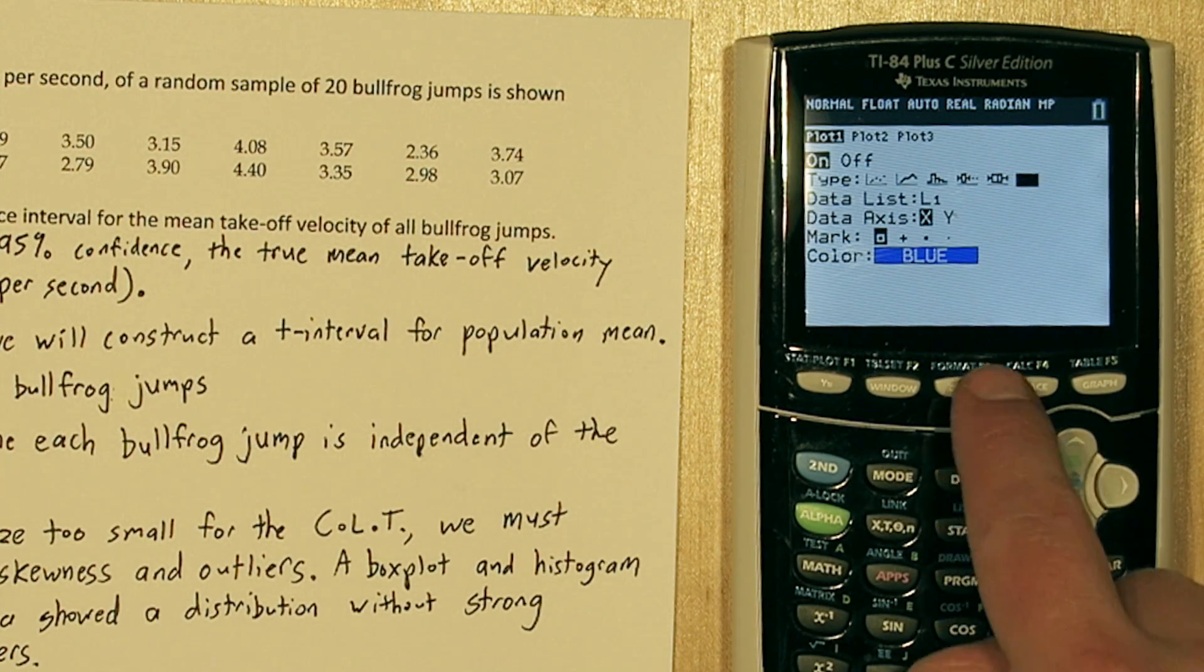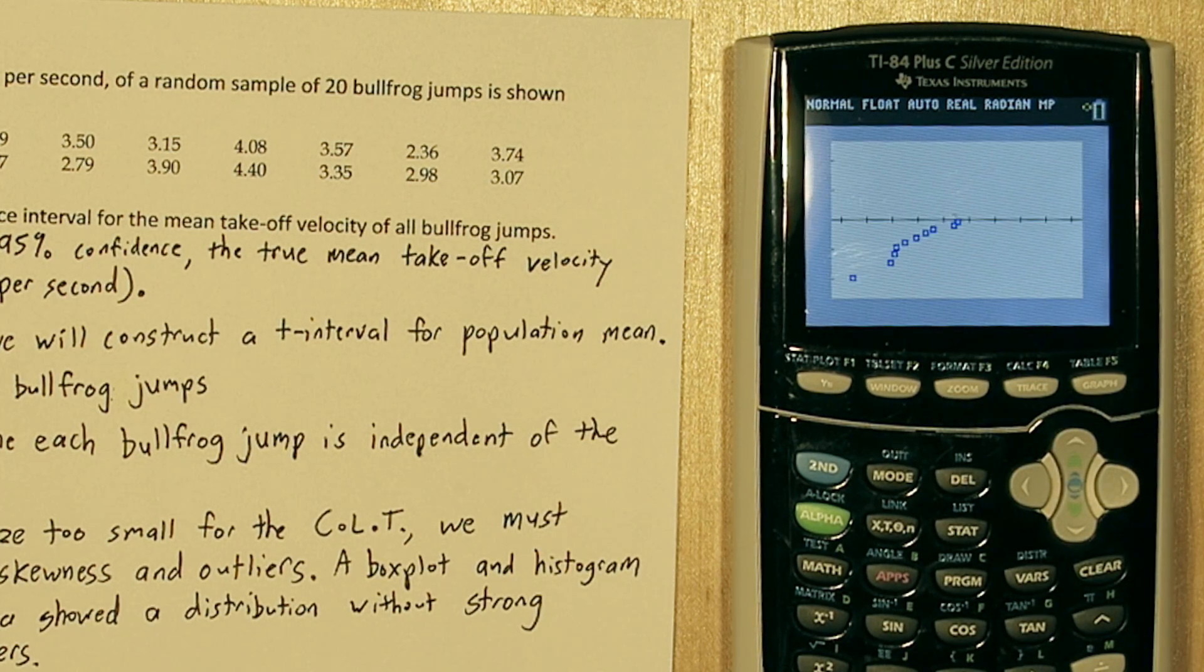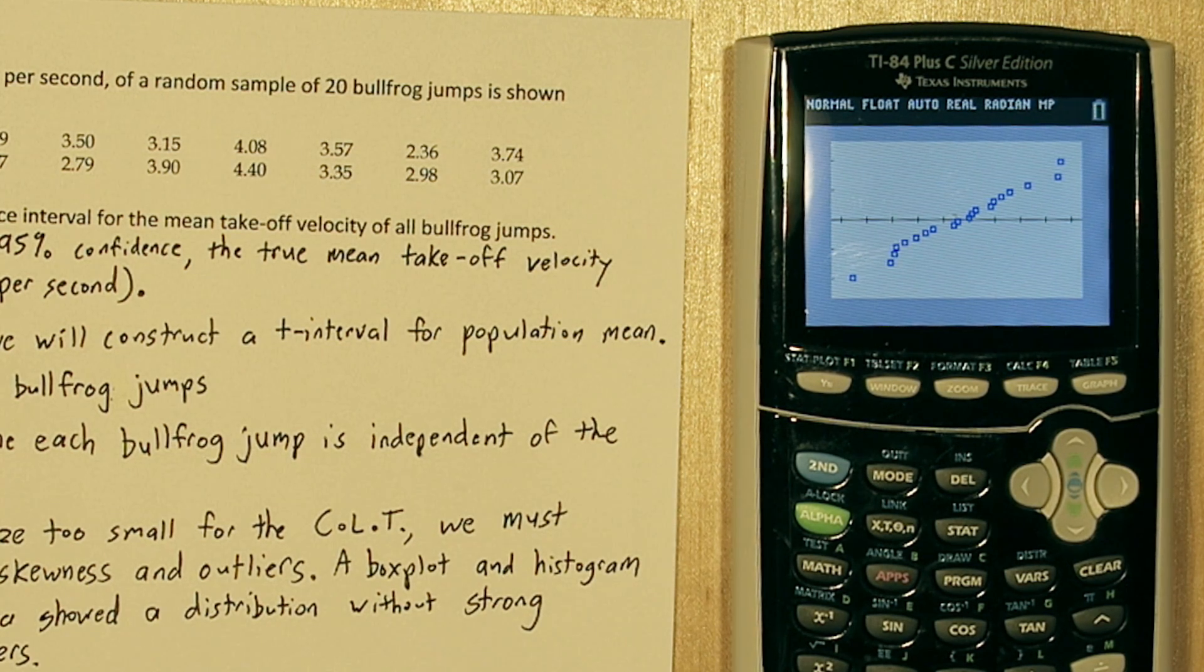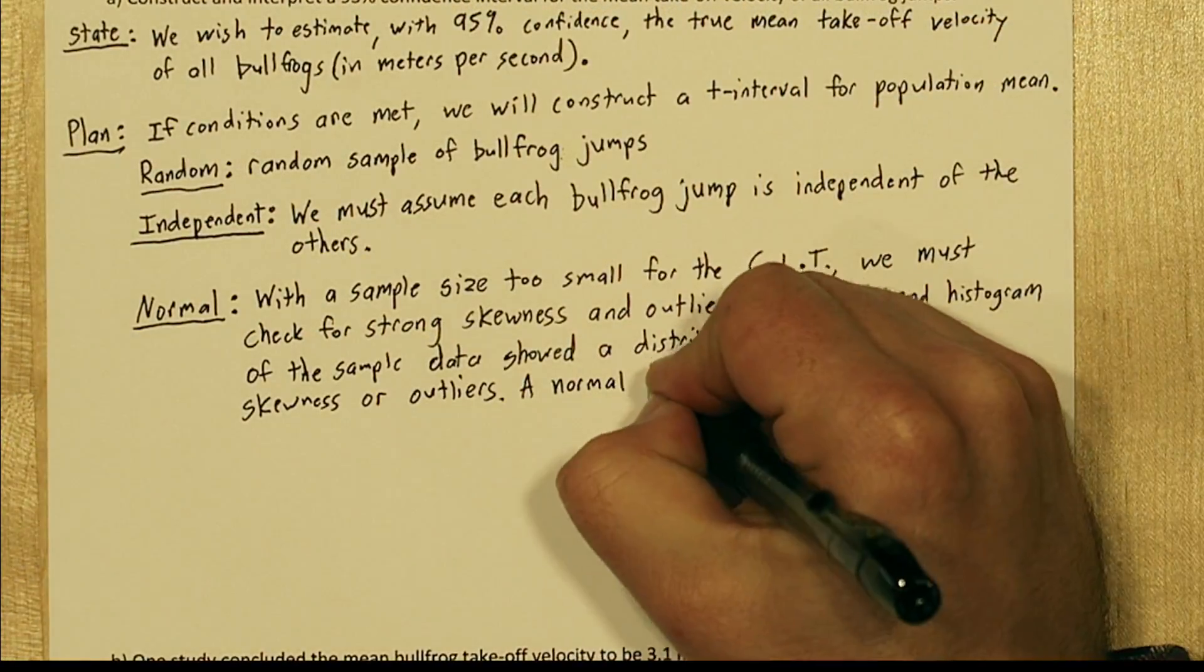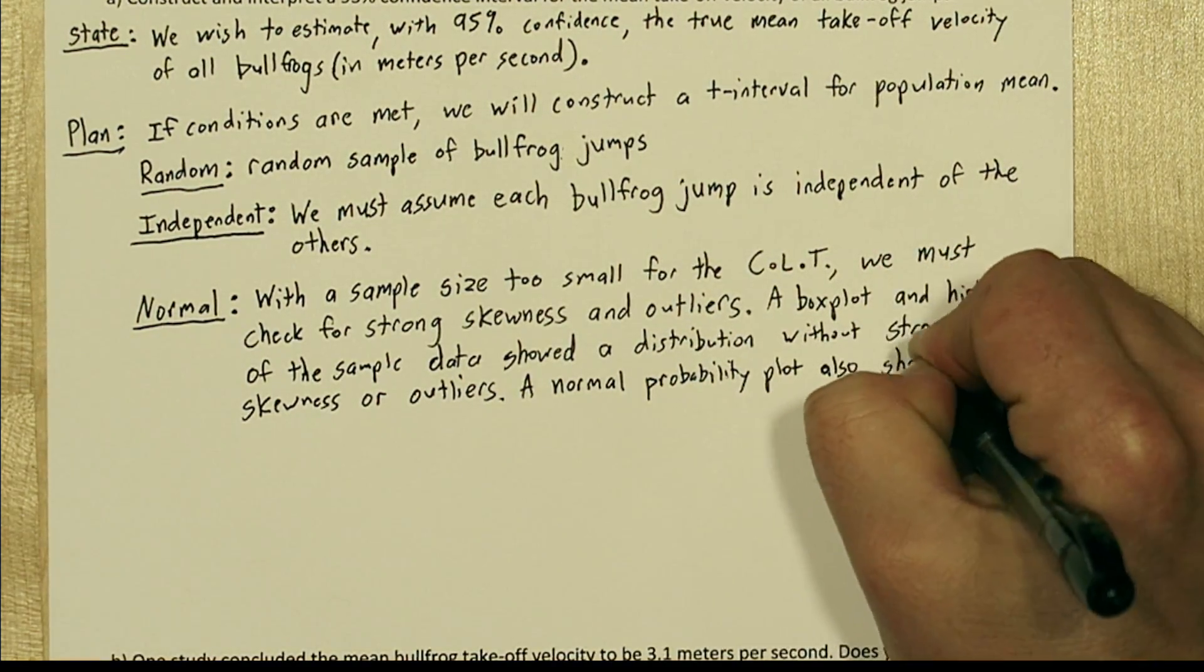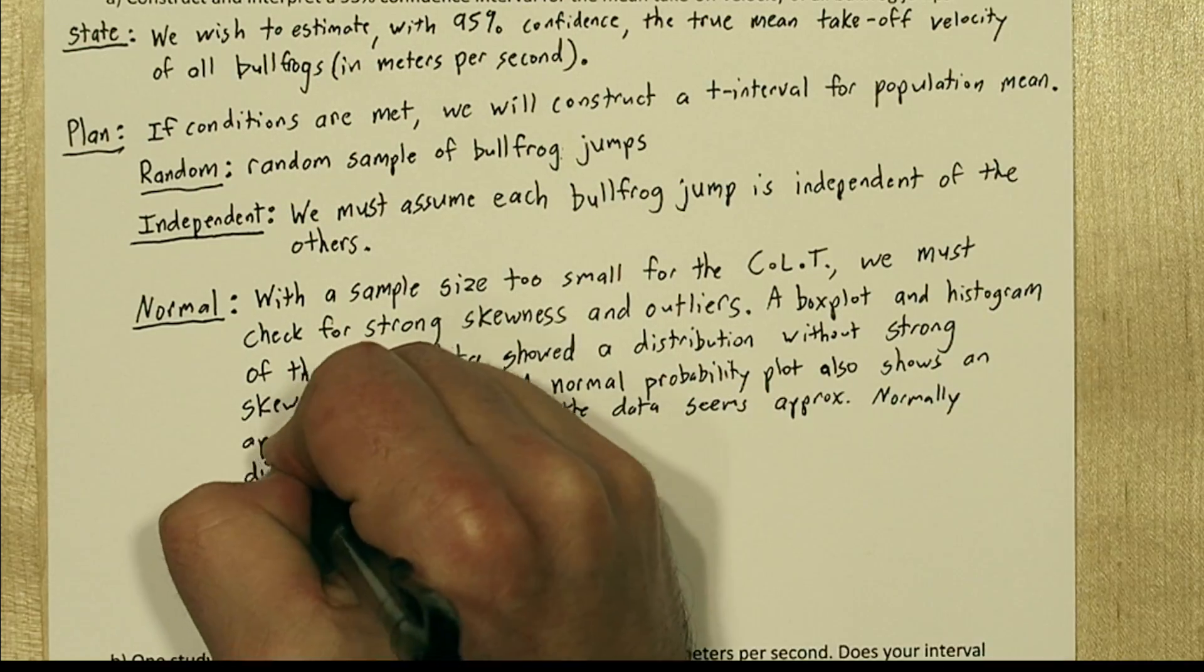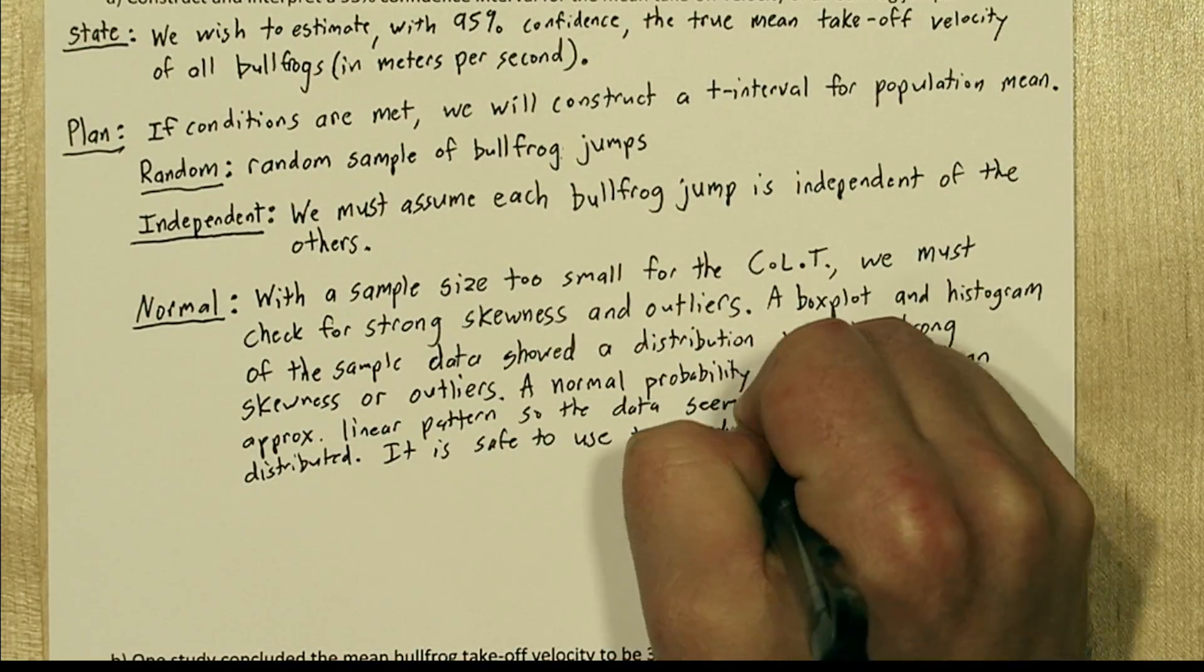When you press zoom 9, you get a normal probability plot. As long as all these dots seem approximately in a linear pattern, you can assume the data is approximately normal. And in this case, they do appear approximately linear. So we can write a normal probability plot also shows an approximately linear pattern. So the data seems approximately normally distributed. It is safe to use t procedures.